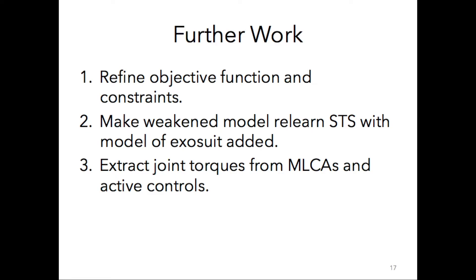However, there is more work to be done. First, I will refine the objective function and constraints by adding a zero velocity and zero acceleration constraint for the final standing position, penalizing for negative output forces at the toe and heel constraints — which intuitively would mean the model's foot is leveraging the ground to stand up — minimizing the usage of the muscle-like coordinate actuators, defining a simulation termination event handler to make simulation time variable, and thus finally minimizing the simulation time. Second, I will make a weakened model relearn sit-to-stand with and without the exosuit added, modeled as active controls on top of the original muscle-like coordinate actuators. Finally, I will extract the joint torques from these optimized motions from the elderly model and, for validation, compare them against the healthy model sit-to-stand joint torques, as well as the joint torques previously derived from the experimentally gathered kinematics data.